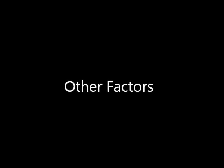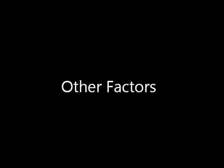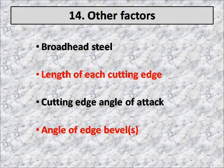We have some other factors that are really important, but you can't measure or quantify them. One of them is the broadhead steel. The quality of the broadhead steel is very, very important. It's going to determine how thin an edge you can work with, and we'll talk in a little bit about how thin edges are important. It also affects the retained sharpness of the broadhead.